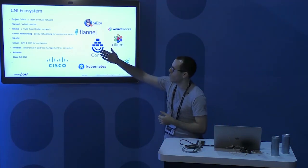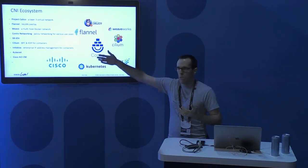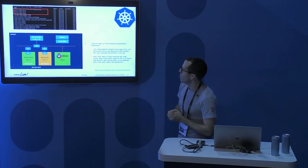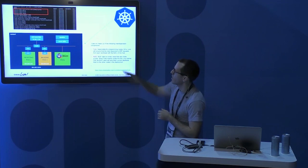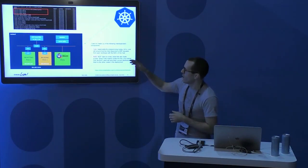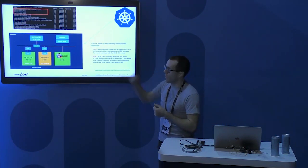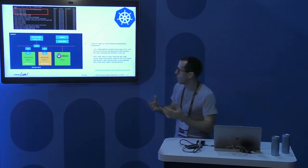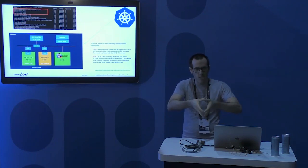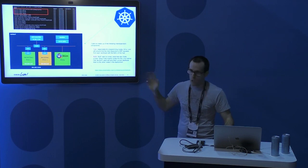CNI plugins all do networking, some have more detailed networking policies or security policies. There's no right or wrong — it depends on your requirements. We're going to look at Calico. The way Calico works: there is a Calico node pod running on every node. Calico has two main components: one configures IP tables, responds to ARP, configures the routing table and virtual Ethernet interfaces. The second is a BGP client, which ensures route distribution across all master and worker nodes so that traffic between pods on different nodes can be routed correctly.